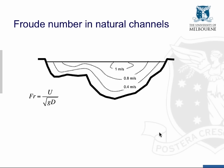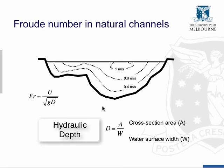Finally, the Froude number for a natural channel. The Froude number is velocity divided by the square root of gravitational acceleration times depth in a rectangular channel. But in a channel where the depth varies across the cross section, which depth do you use? What is used is the hydraulic depth — the mean depth — which is the cross-sectional area divided by the top width.